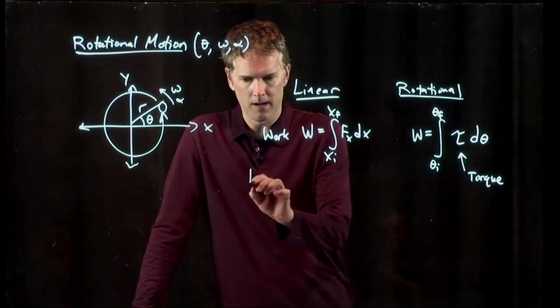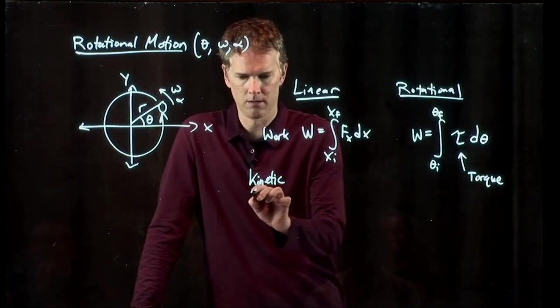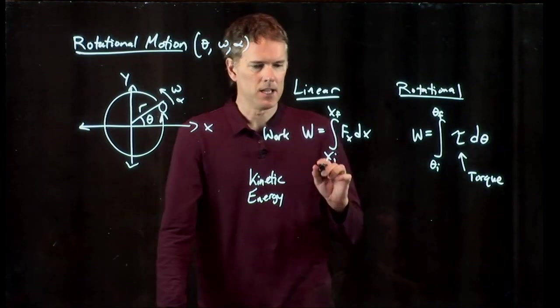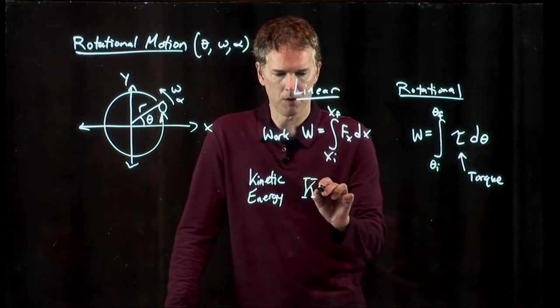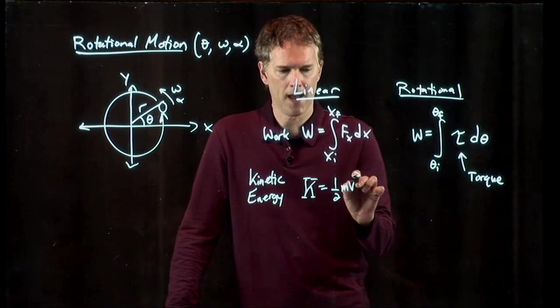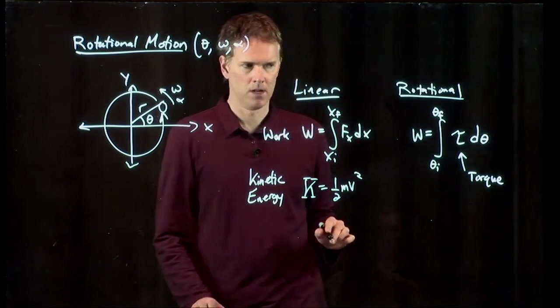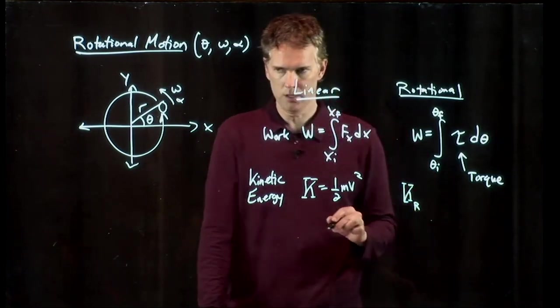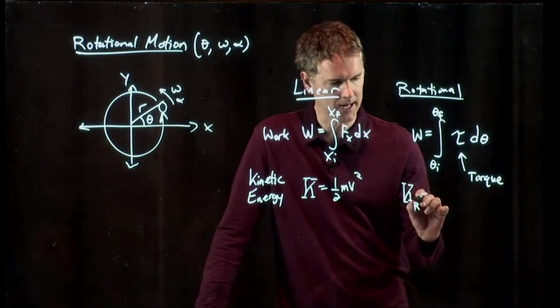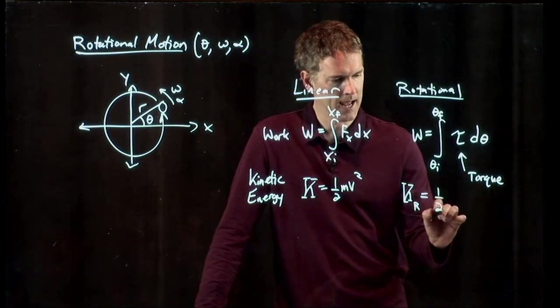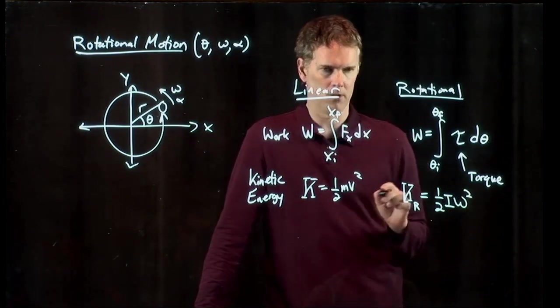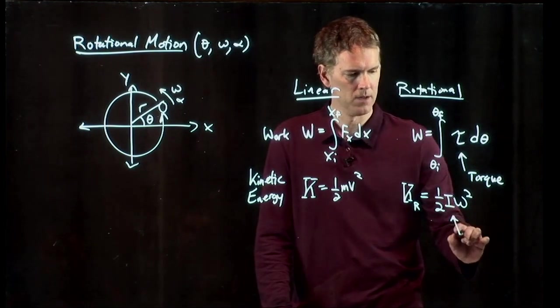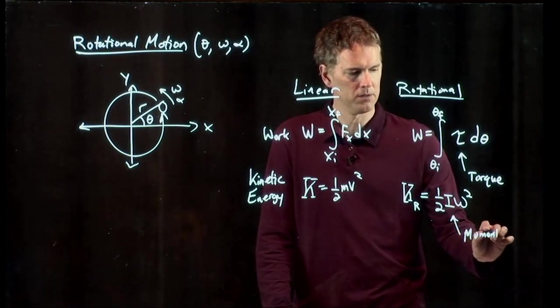We also know that when things are moving, they have kinetic energy. And the kinetic energy that we write with a capital K is just 1/2 mv squared. If things are rotating, they also have energy. And we call that rotational kinetic energy, 1/2 I ω squared. And now we've introduced yet another term, I, which is the moment of inertia.